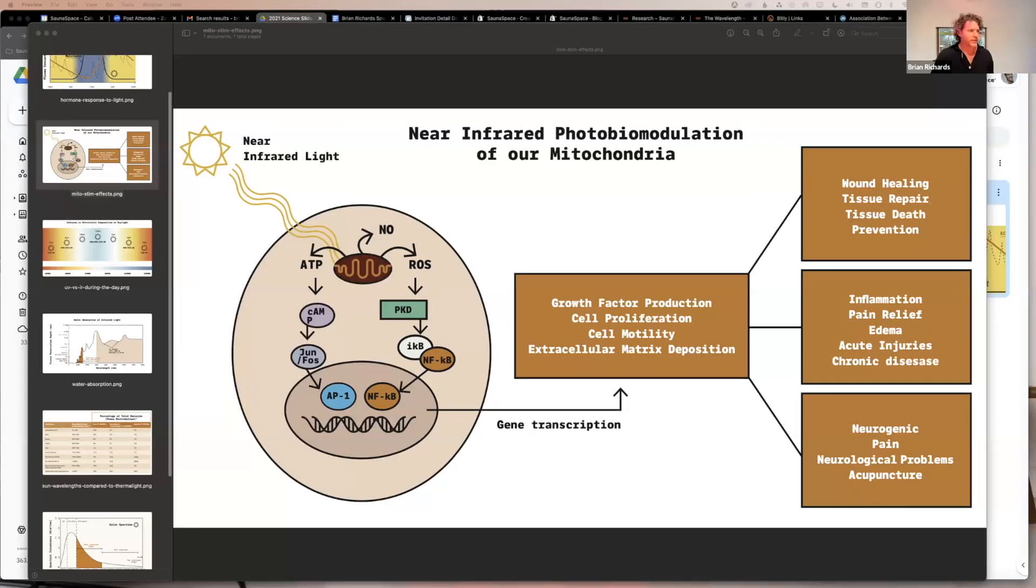What we do at SaunaSpace is light and heat therapy stacked together. Let's first talk about why is light so important. I got a cool slide here I can show you. Light therapy is defined as the use of red and near-infrared light to heal damaged tissue and re-optimize function of healthy tissue. Red light we can see with our eyes, and near-infrared light is just outside the visible light spectrum. We can't see it with our eyes, but I'm gonna show you later how important that is in terms of the sun. It's the majority of the sun spectrum.